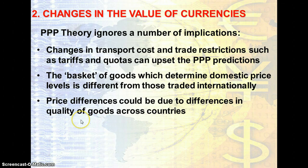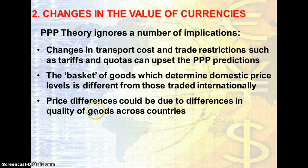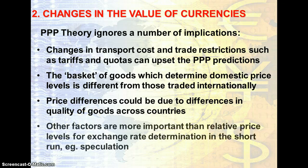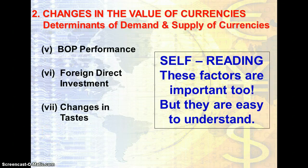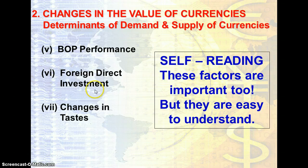Third, price differences could be due to differences in the quality of goods across countries — a lack of homogeneity of products. The theory assumes the basket of goods to be uniform, but for example, a Volvo and a Chrysler can hardly be considered identical. Fourth, relative price changes are not the only determinant of the exchange rate — other factors such as speculation are more important in the short run. There are additional factors explained in the lecture notes, such as balance of payments performance, FDI, and consumer preferences, which you should read through independently.